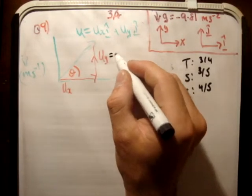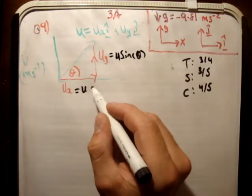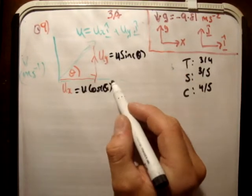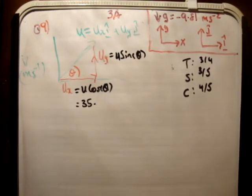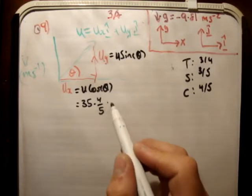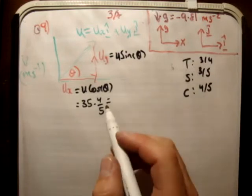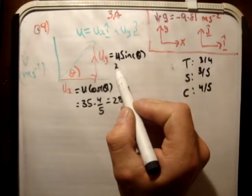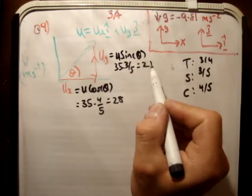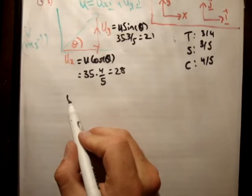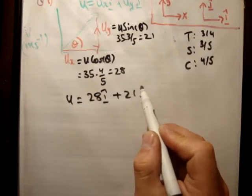So let's resolve these as normal. That's going to be u times sine theta and this is going to be u cos theta. So that's going to be equal to 35 times cos theta which is 4 fifths and that's going to be equal to 7 times 4 is 28. This one is going to be equal to 35 times the sine of 3 fifths equal to 21. So as a result u is equal to 28 i hat plus 21 j hat.